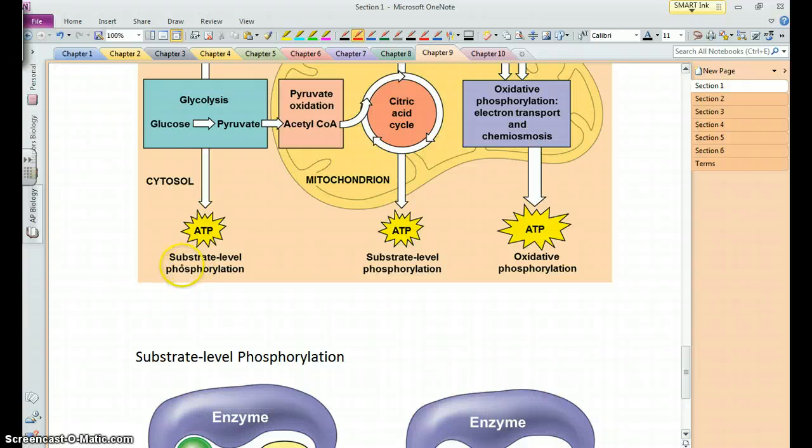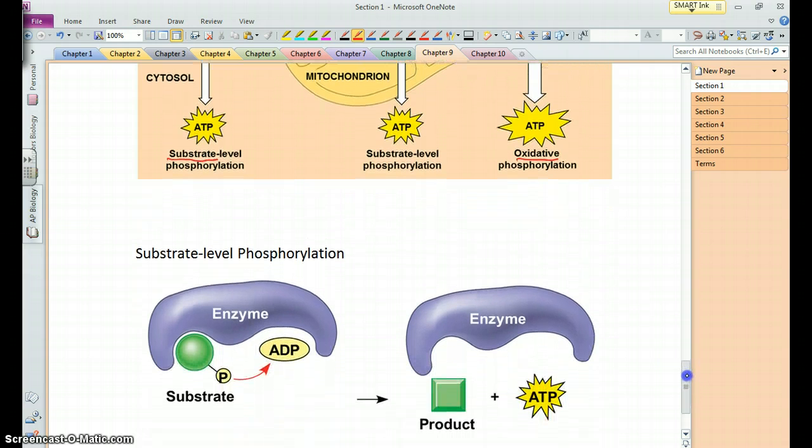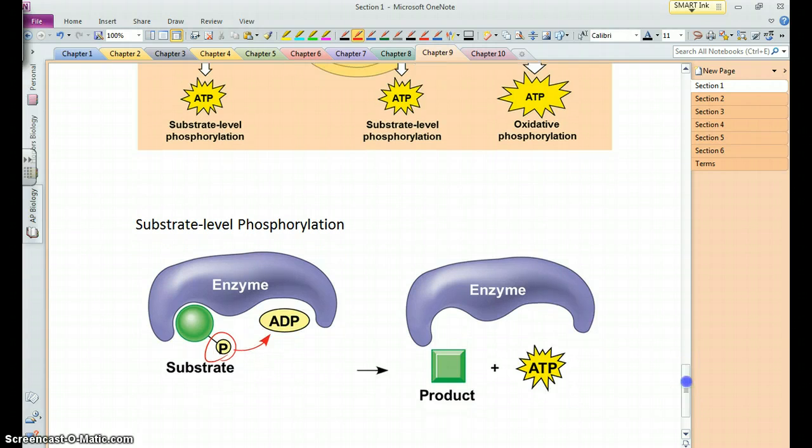Now notice we've got some terms here. We've got substrate level phosphorylation and oxidative phosphorylation. In each case, we're adding phosphates onto ADP to convert it into ATP. That's the phosphorylation part. This can happen a couple different ways. The phosphate that's being transferred to ADP can come from a substrate. It's going to be stripped off of it, and that's what's known as substrate level phosphorylation. Or it can just come from the surrounding solution. That's what's known as oxidative phosphorylation.